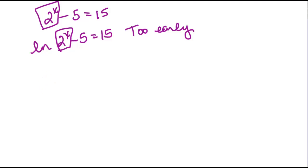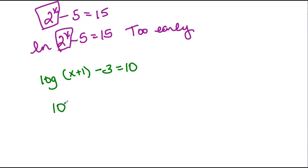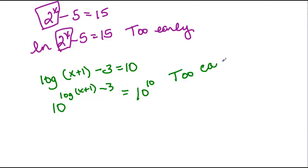We've also had log equations like log of (x plus 1) minus 3 equal to 10. People want to say, oh, I can just exponentiate right away — take the inverse function. They would write something like 10 to the 10. But again, this is too early. We need to get the log of (x plus 1) by itself first, just like we need to get 2 to the x by itself first.